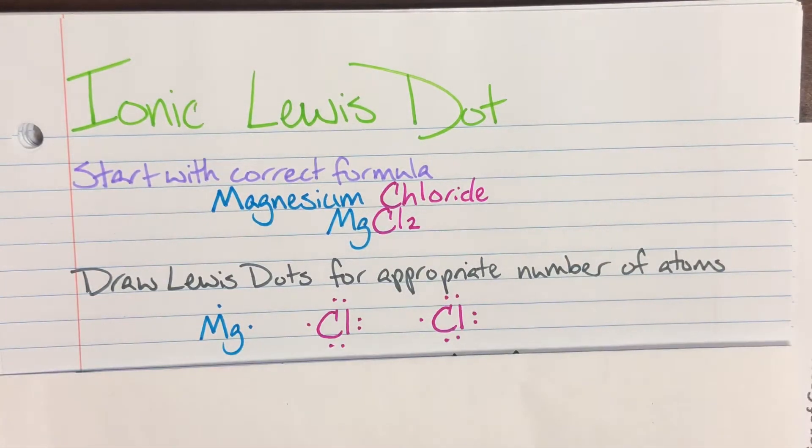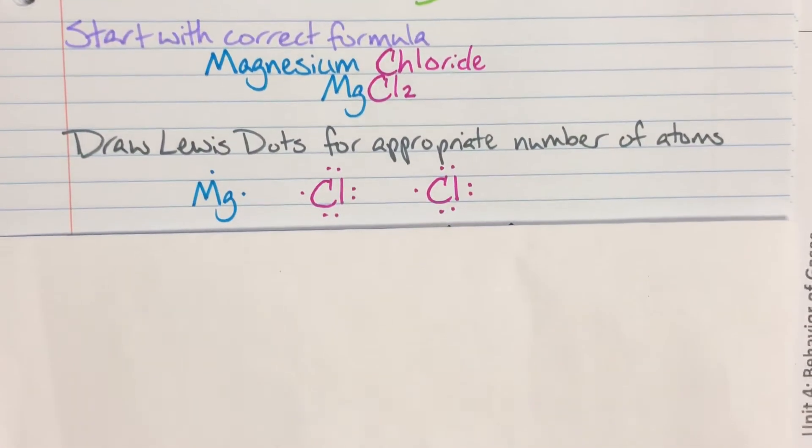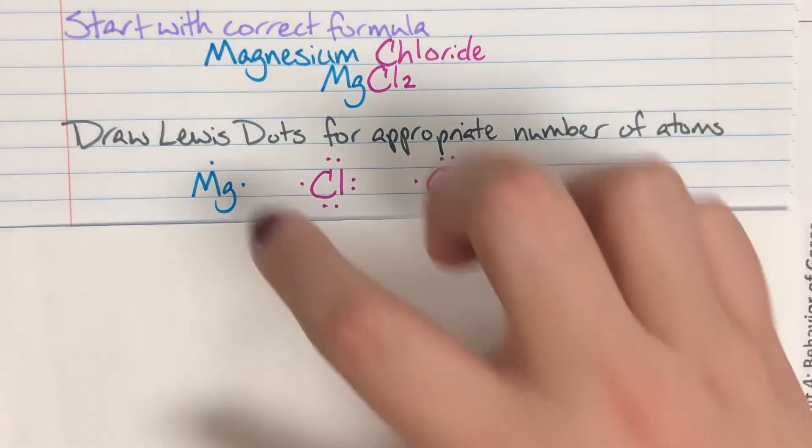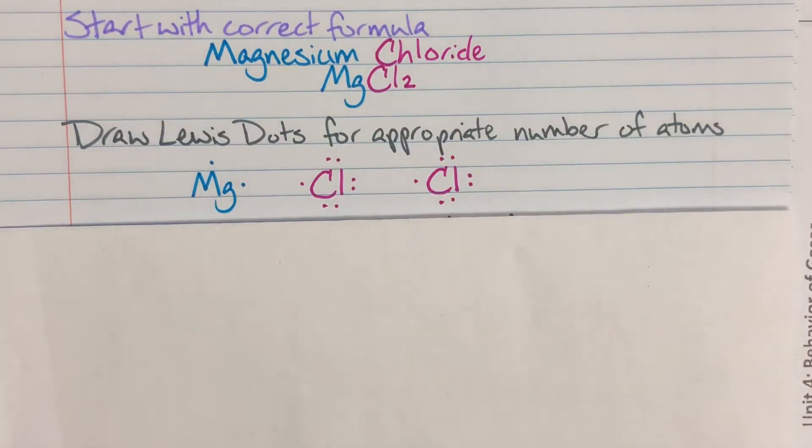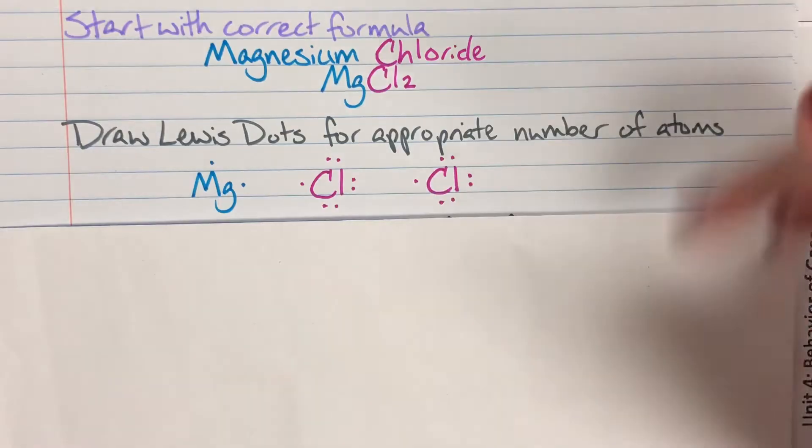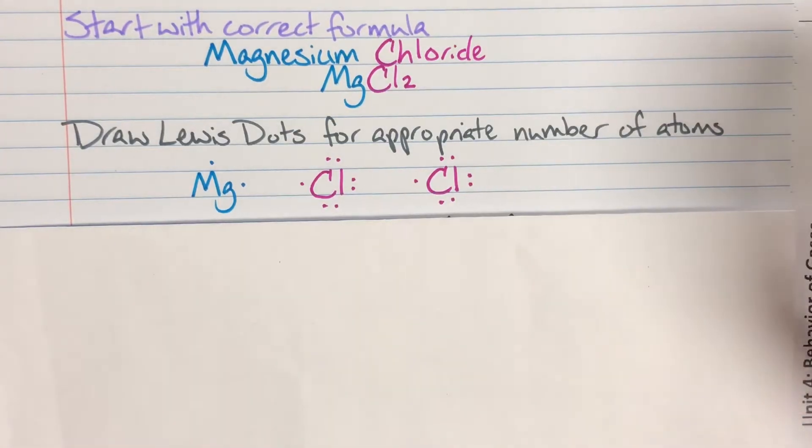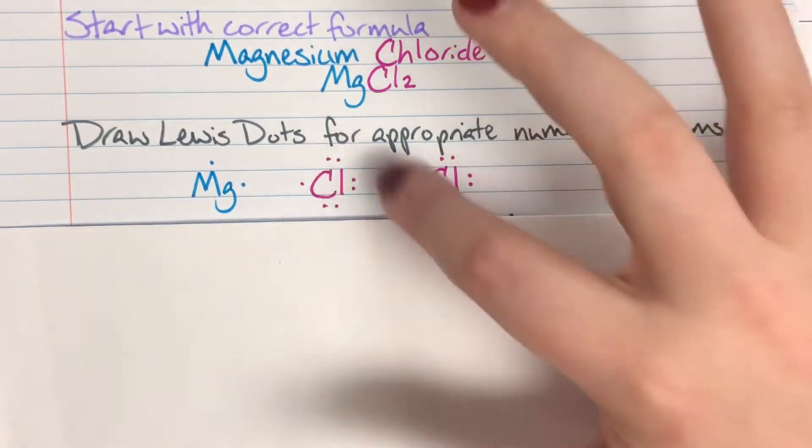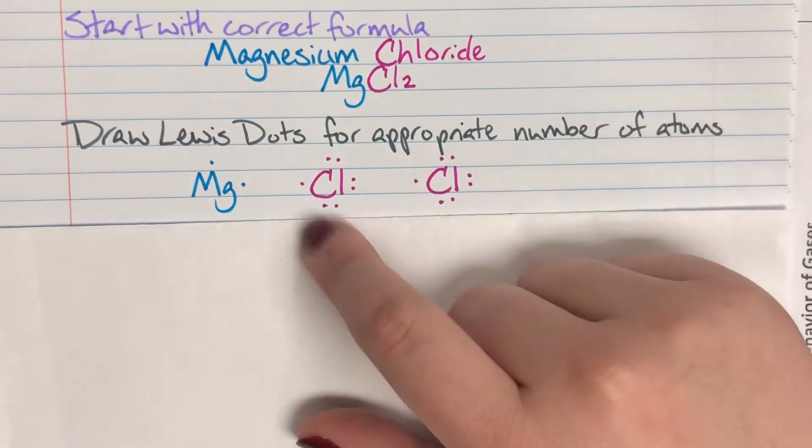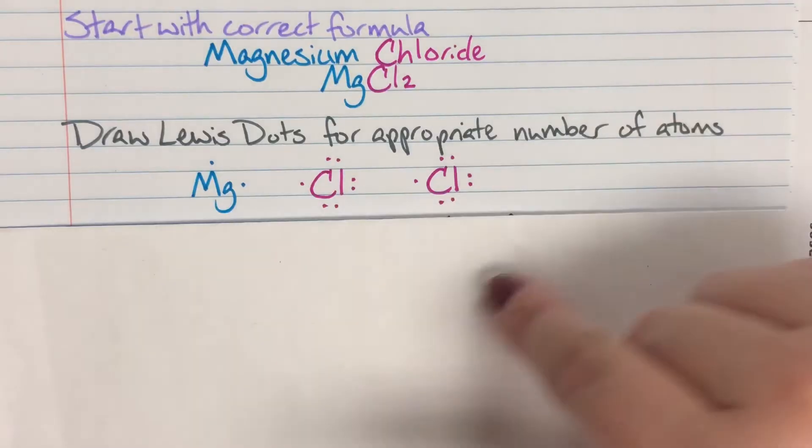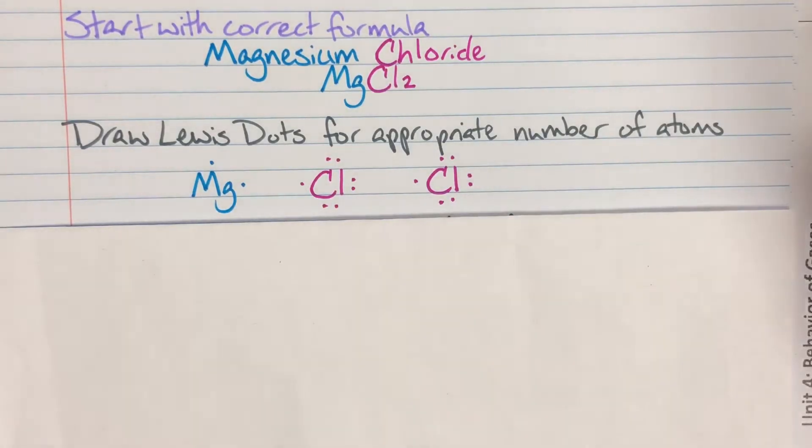So magnesium, as we already discussed, was in column two. That would make it have two valence electrons, which means I need two dots, one on the top and one on the right. And then we had two chlorine atoms, and chlorine is in column seven, so that means I need seven valence electrons. So we have three sets of lone pairs and one lone electron on both of my chlorine atoms.